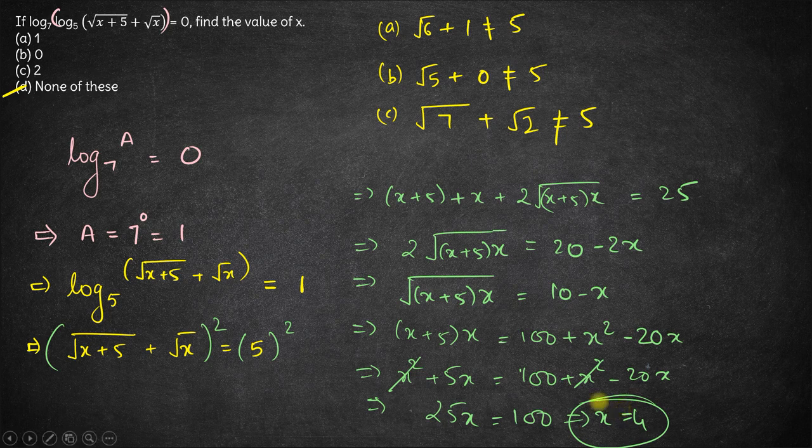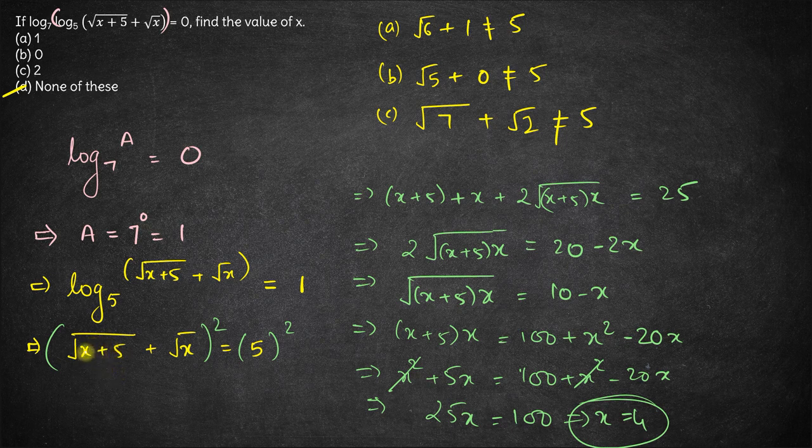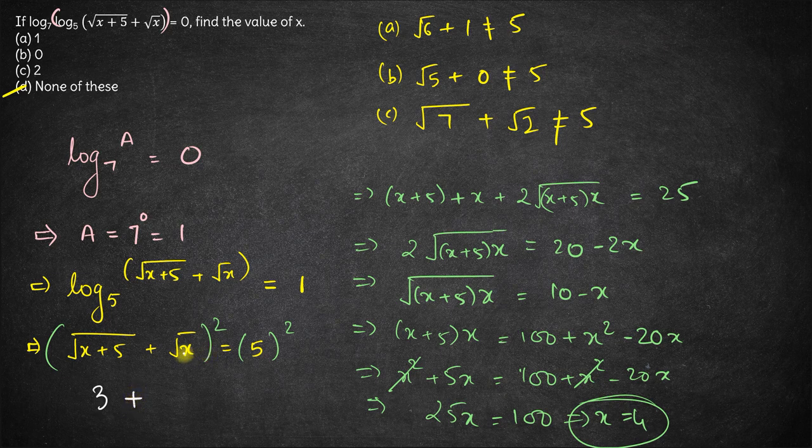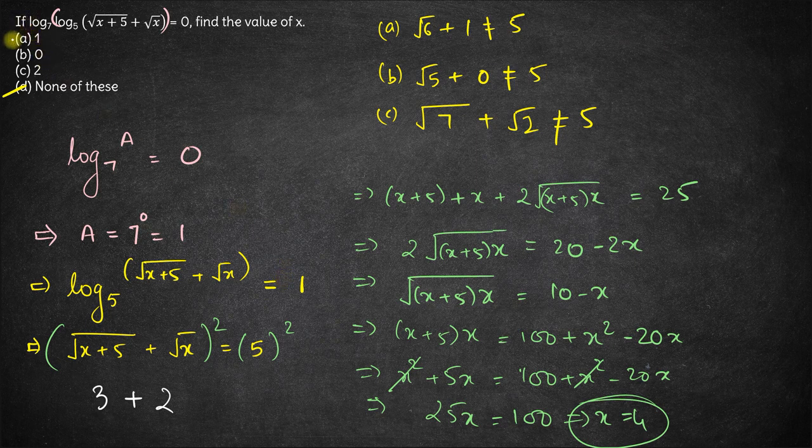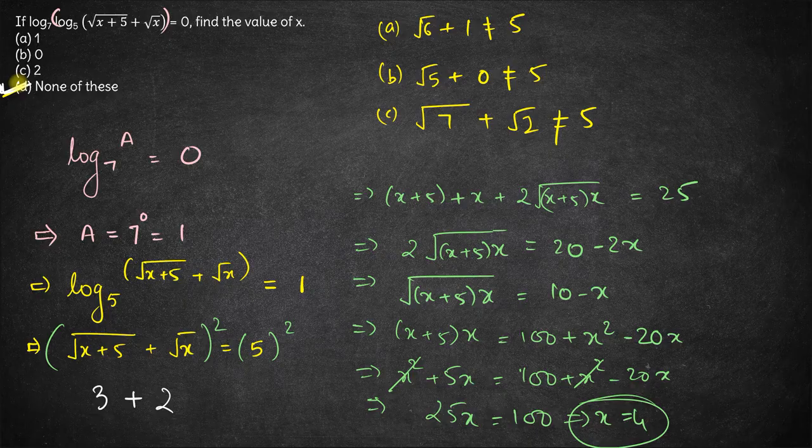Hence this gives us that x equals 100 by 25 which is 4. x equals 4 is the right answer of this question. And if you substitute x equals 4, see what happens. If x is 4, 4 plus 5 is 9, square root of 9 is 3 plus square root of 4 is 2, and 3 plus 2 equals 5 which satisfies. So x equals 4 is not there in the first three options. Hence option D is the right answer here.